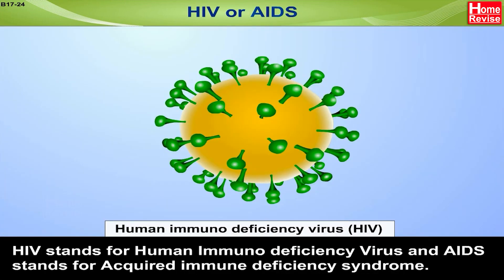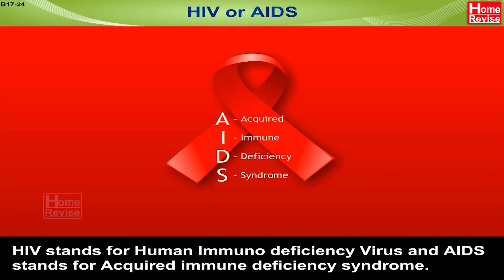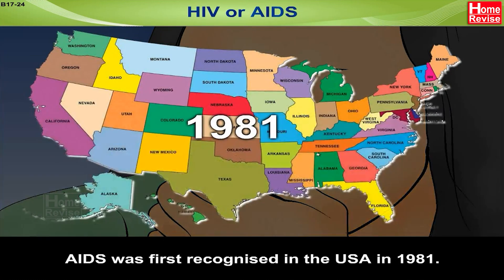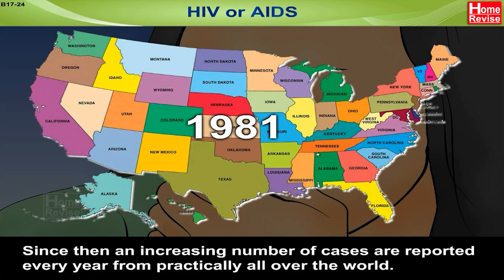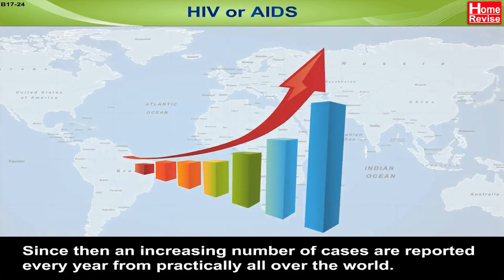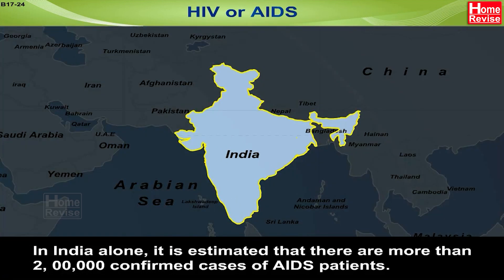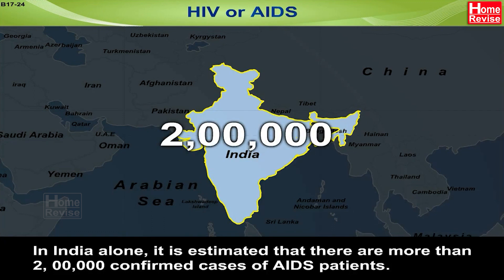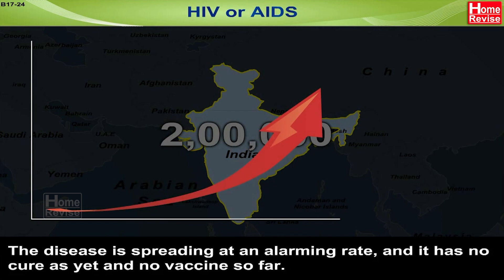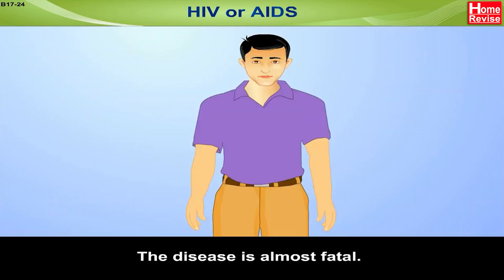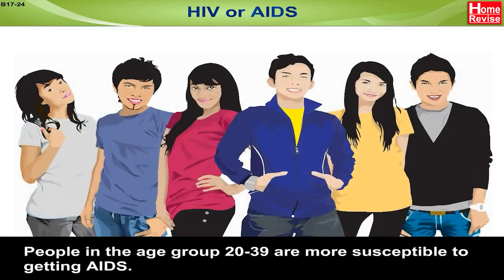HIV, or AIDS: HIV stands for Human Immunodeficiency Virus, and AIDS stands for Acquired Immune Deficiency Syndrome. AIDS was first recognized in the USA in 1981. Since then, an increasing number of cases are reported every year from practically all over the world. In India alone, it is estimated that there are more than 2 lakh confirmed cases of AIDS patients. The disease is spreading at an alarming rate; it has no cure as yet and no vaccine so far. The disease is almost fatal. People in the age group 20 to 39 are more susceptible to getting AIDS.